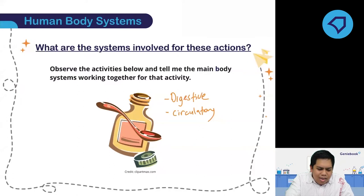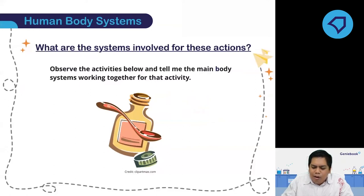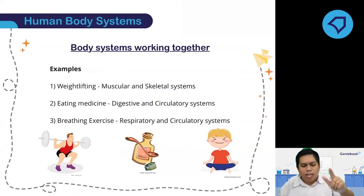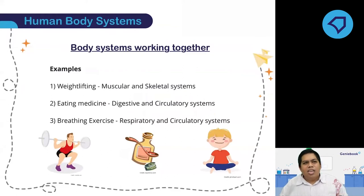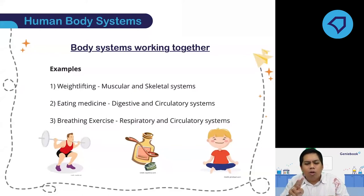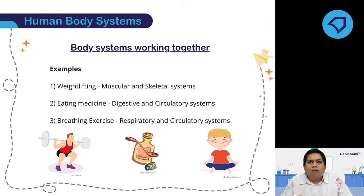So those are the three activities showing the systems working together. Just to recap: weightlifting requires the muscular and skeletal systems; eating medicine requires the digestive and circulatory systems; and breathing exercise or meditation requires the respiratory and circulatory systems. Some of you asked whether activities require more than two systems — yes, it is possible to be more than two, but we usually identify the two most important systems working together for that particular activity.